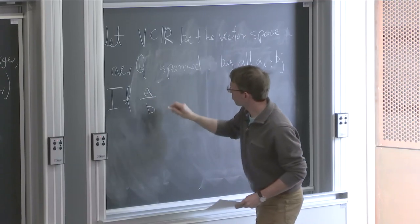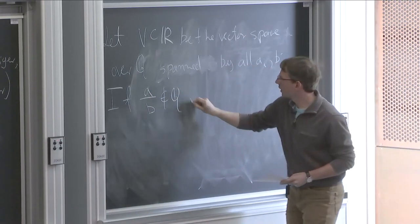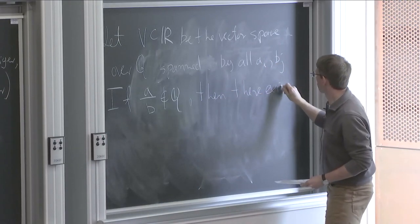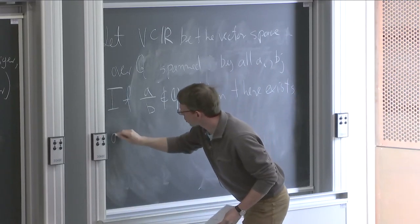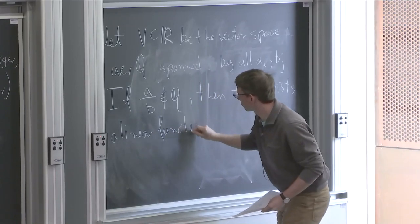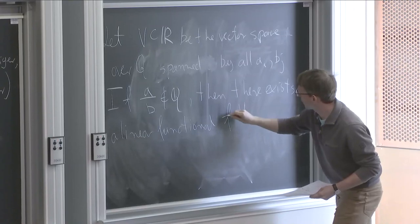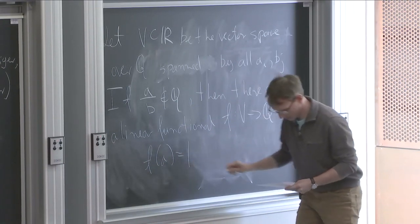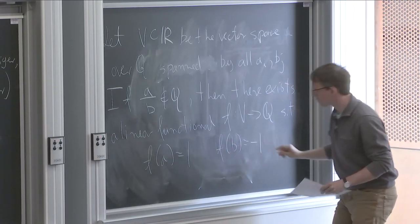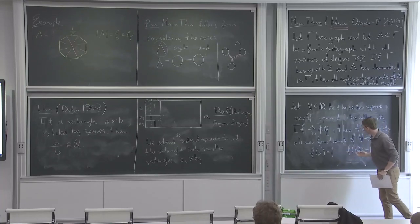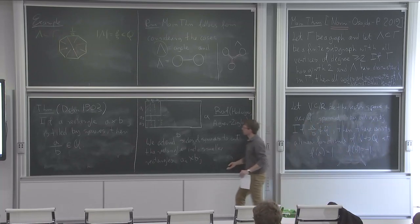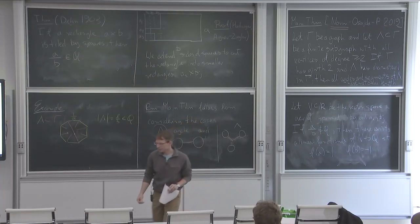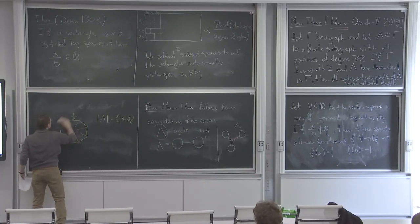If the proportion of A to B is irrational, then A and B are linearly independent in this vector space. So then there exists a linear functional F defined on this space with values in Q such that F(A) = 1 and F(B) = -1, because we can arbitrarily decide the values of A and B once they are linearly independent.